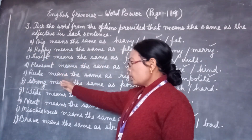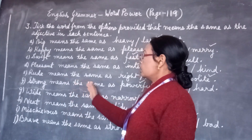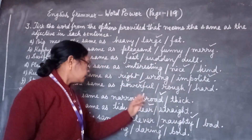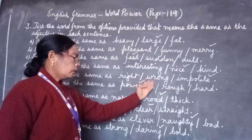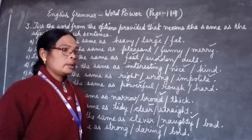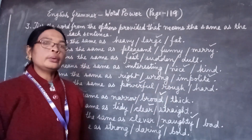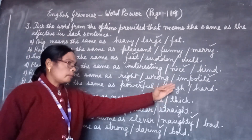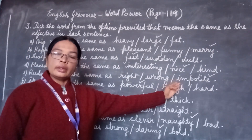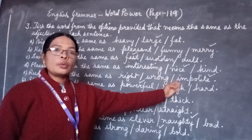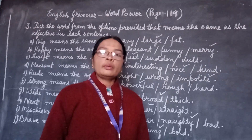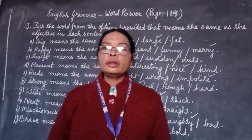Now come to number E. 'Rude' means the same as — the options are right, wrong, and impolite. The meaning of rude is impolite. So we will put a tick mark on the word impolite.